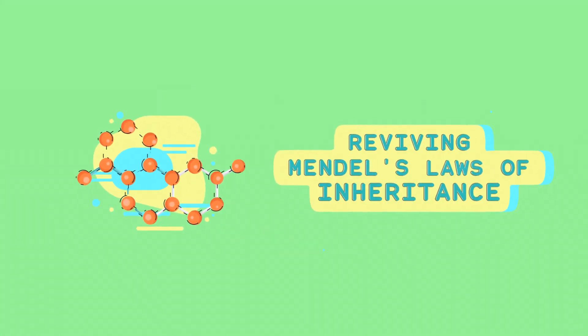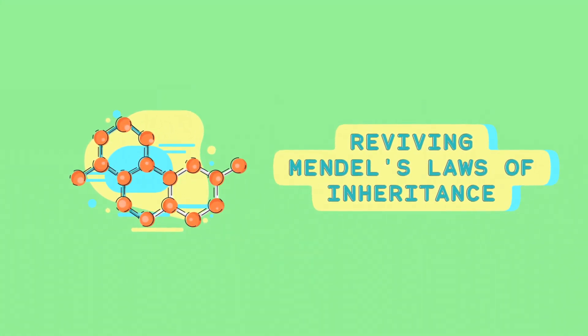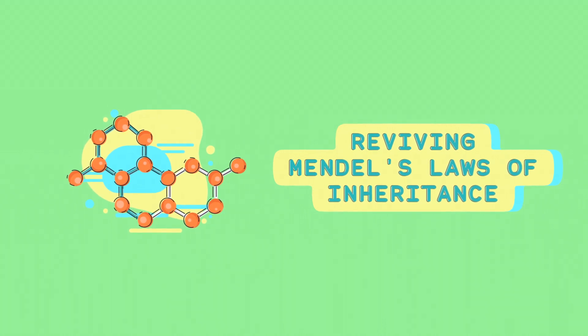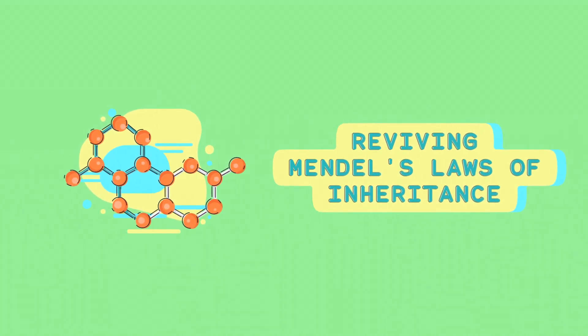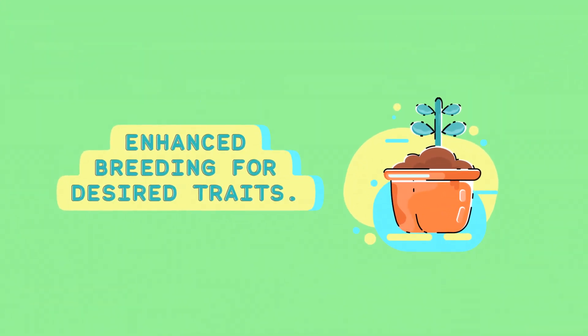Mendelian Genetics: the rediscovery of Gregor Mendel's laws of inheritance in the early 20th century provided a scientific foundation for plant breeding. Breeders could now make more targeted crosses to achieve desired traits.